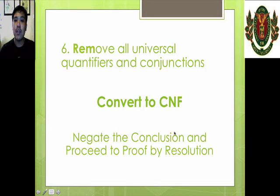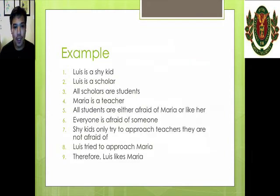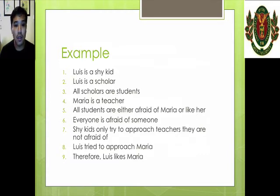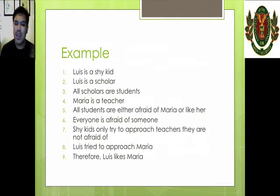To proceed to resolution, we first negate the conclusion and then try to apply the resolution rule to each statement. We pair up statements so that some terms will be eliminated until we arrive at a contradiction. Let's look at this example. Here are the statements we need to prove: Luis is a shy kid; Luis is a scholar; all scholars are students; Maria is a teacher; all students are either afraid of Maria or like her; everyone is afraid of someone; shy kids only try to approach teachers they are not afraid of; Luis tried to approach Maria. Therefore, Luis likes Maria. In one sense we can already say this is valid, but how do we systematically prove this?